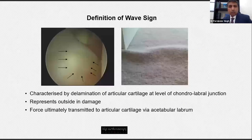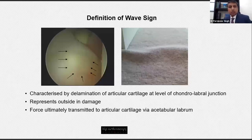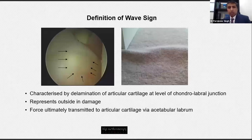My brief is to talk about the wave sign, and I want to start with the definition. It's characterized by a delamination of the articular cartilage at the level of the chondral-labral junction, and this represents essentially outside-in damage. The mechanism is ultimately a force being transmitted to the articular cartilage by the acetabular labrum.